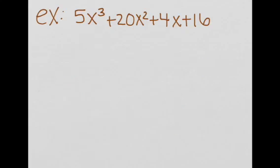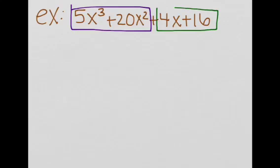We have the expression 5x³ + 20x² + 4x + 16. Our first step is to divide it up into the first two terms and the last two terms. We're going to deal with these separately, so we might as well draw a line between these two at first.